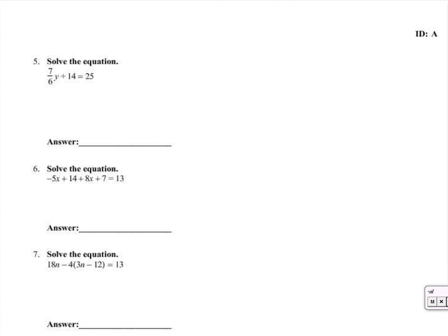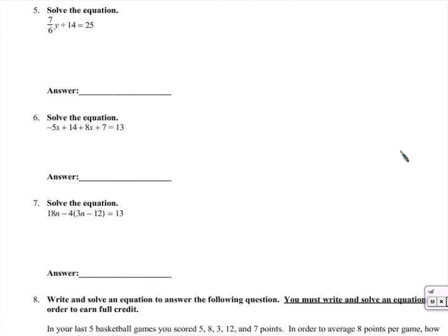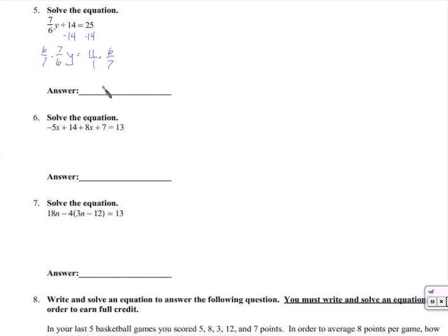Number 5 — this is like a hybrid of problems 3 and 4. We subtract 14 from both sides first. Now we have 7 sixths y equals 11. We multiply by 6 sevenths on both sides. 11 can't be divided by 7, so no cross cancellation — y equals 66 over 7.